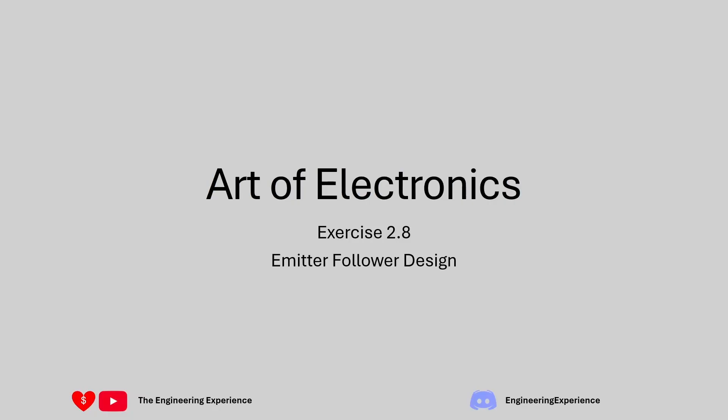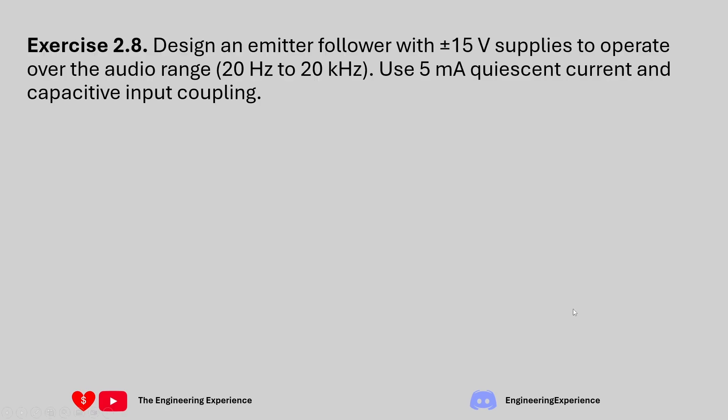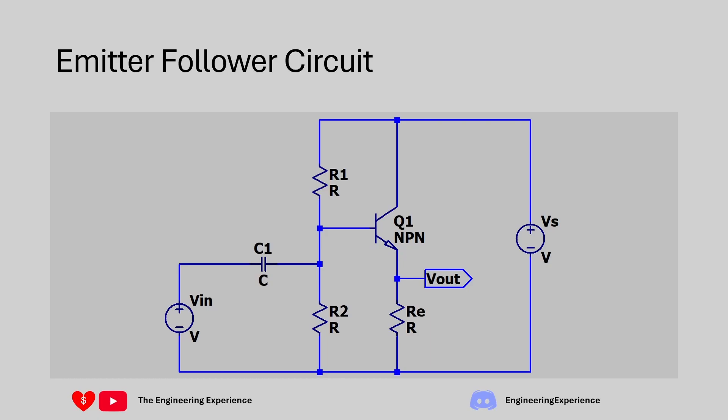We are designing the circuit for exercise 2.8 from the Art of Electronics. We need to design an emitter follower with a 15 volt power supply to operate over the audio range which is 20 hertz to 20 kilohertz, and we need to set the quiescent current to 5 milliamps. The input is capacitively coupled. So first of all let's have a quick look at an AC coupled emitter follower circuit.